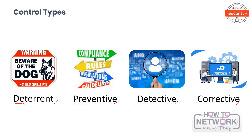Next are detective controls, which attempt to identify unwanted events after they have occurred. Common technical detective controls include audit trails, intrusion detection systems, system monitoring, checksums, and anti-malware. Common physical detective controls include motion detectors, CCTV monitors, and alarms. Administrative detective controls are used to determine compliance with security policies and can include security reviews and audits, mandatory vacations, and rotation of duties.